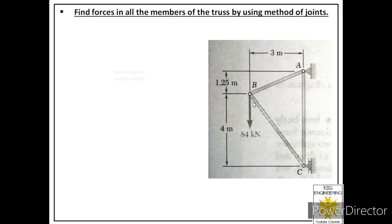Whenever we solve any problem on trusses through method of joints, the very first step is to identify the supports used in that particular truss. Based on the supports, we label the reactions they provide. In this problem, at joint A we are given a pin support, and at joint C we are given a roller support.